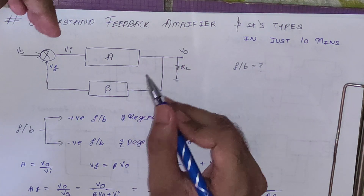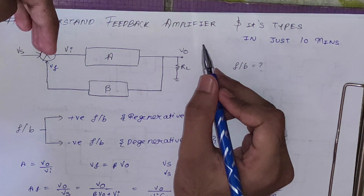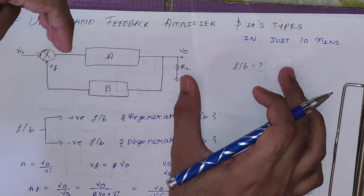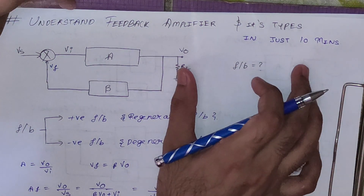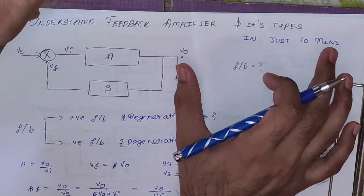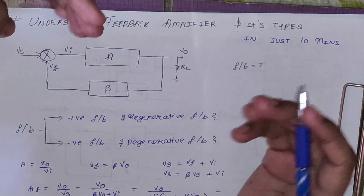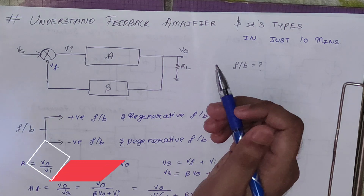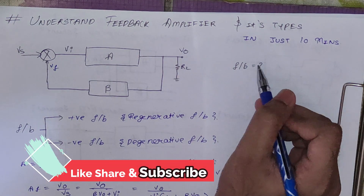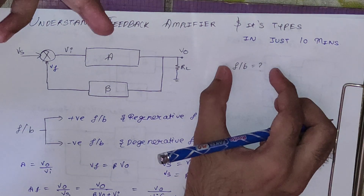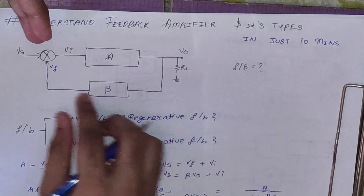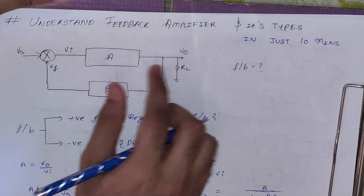Hello friends, today we are going to see how we can understand feedback amplifiers and their types in just 10 minutes. We are going to cover all basic concepts as well as advanced concepts that will be helpful to solve GATE problems. So first, what we should know is: what is feedback? Feedback is a process of injecting some part of the output back to the input.